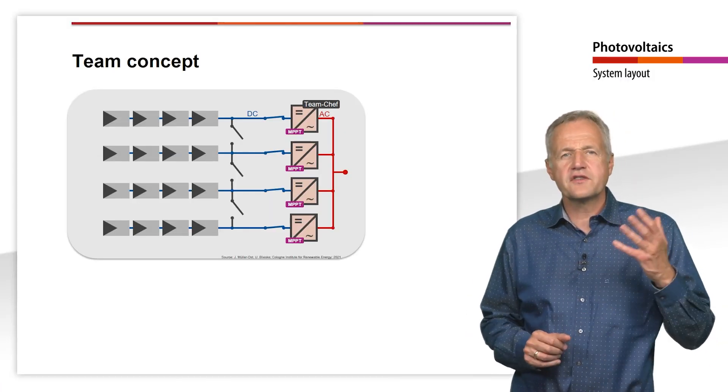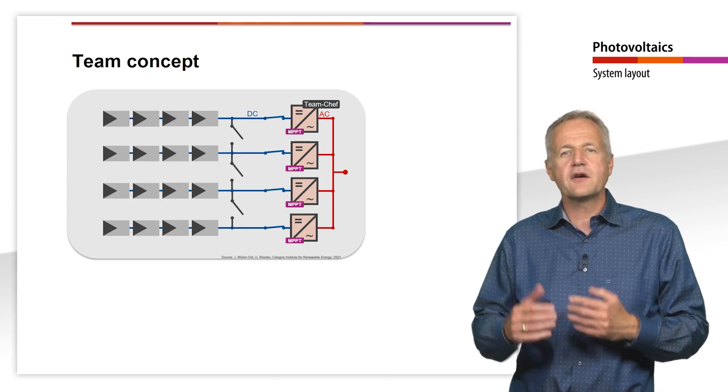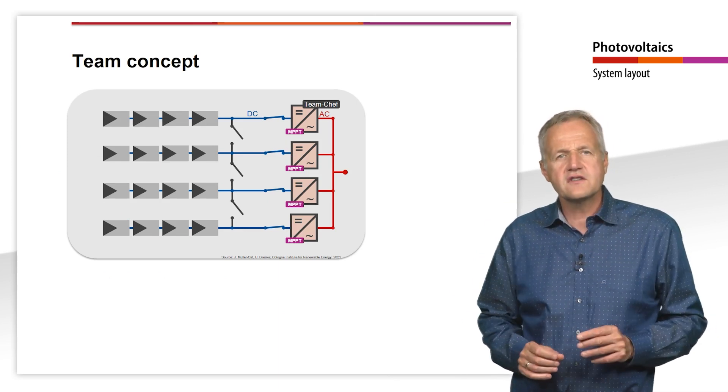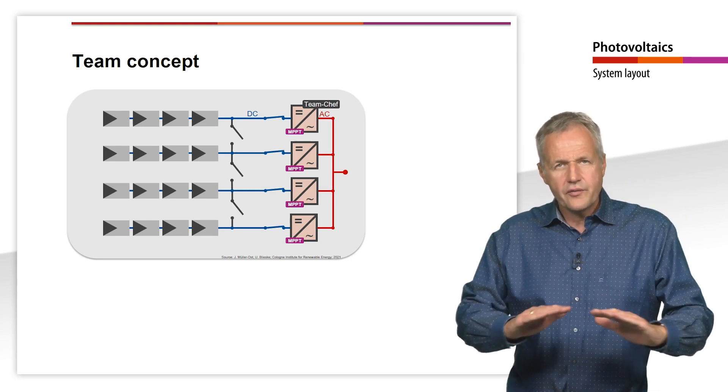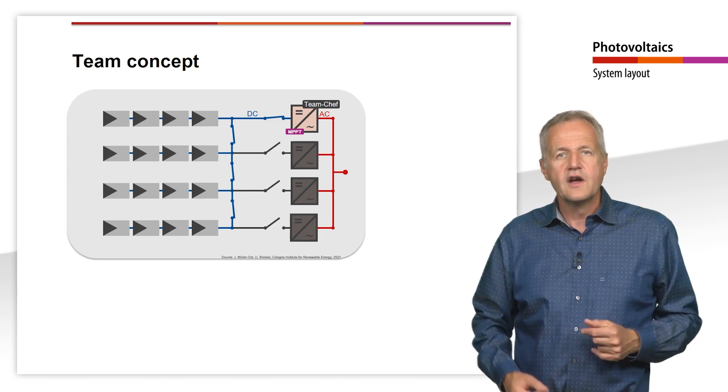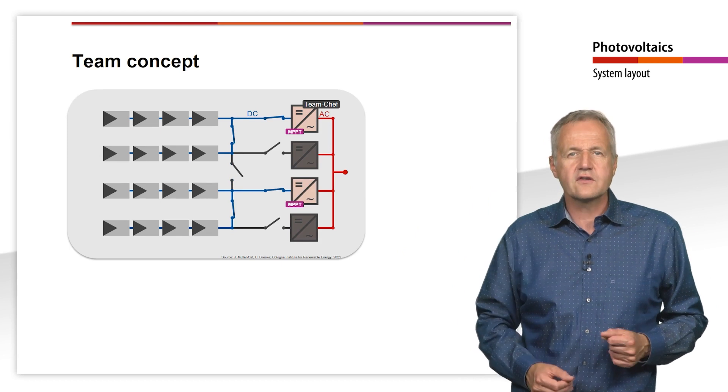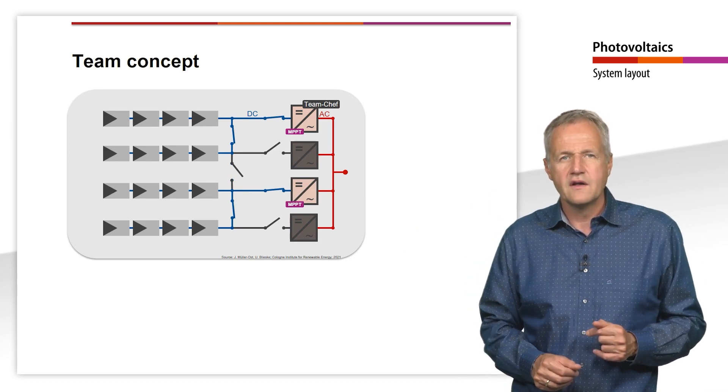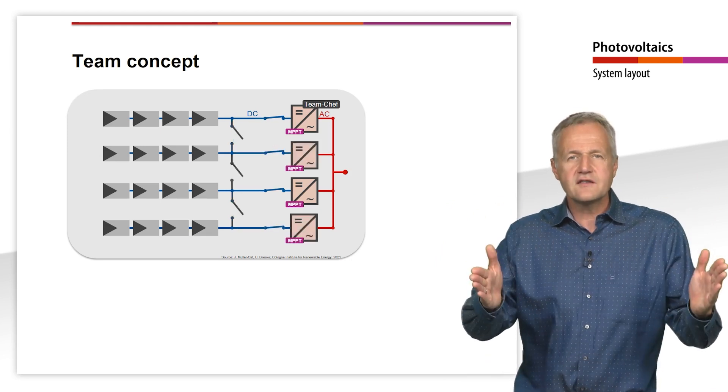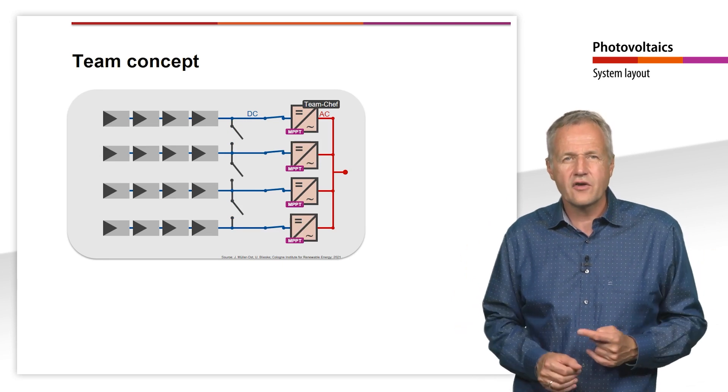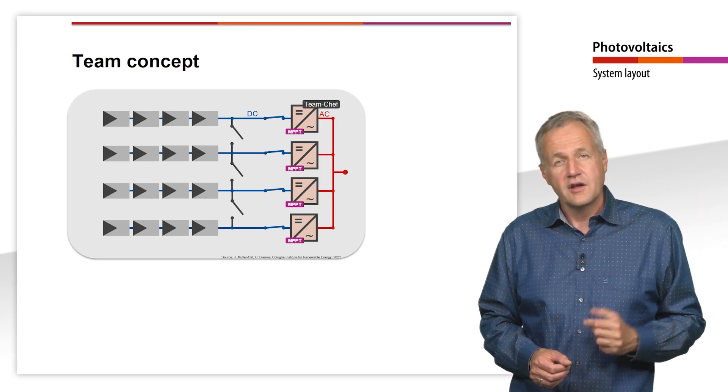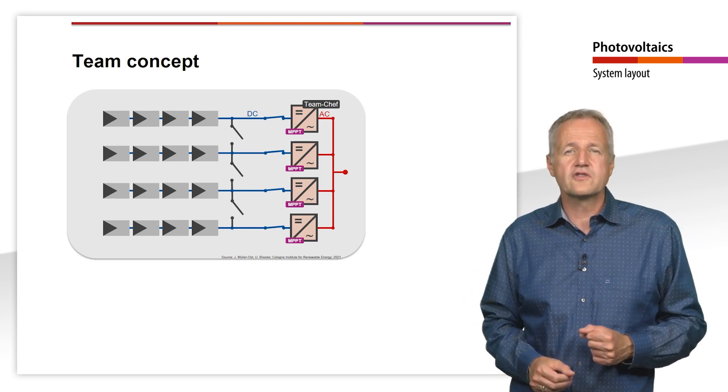In order to reduce the mismatch losses as well, the so-called team concept from SMA can be used instead of the master-slave method. Here, each string is first connected to its own inverter. One of the inverters is given the role of the team leader. At low irradiance, the team leader can switch the strings of the other inverters to itself and work alone. With increasing irradiance, it can activate another inverter so that each inverter takes over 50% of the generator power. If the irradiance increases even more, the number of connected inverters is doubled again until finally the entire system operates in string mode. In contrast to the master-slave concept, each inverter can control the operating power of its partial generator independently of the others. In contrast, mismatch losses are thus reduced compared to the master-slave concept.